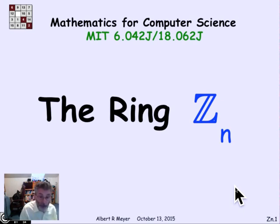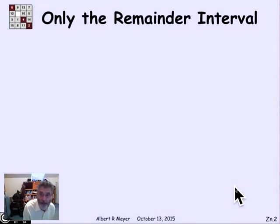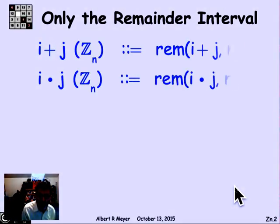But in the meantime, it's regularly the case that the numbers are overflowing and you're dealing with all the integers, but you're working with them modulo n. It turns out to be slick if we just force ourselves to only work with the numbers in the remainder interval. So that's the idea behind the ring Z sub n. We're only working with numbers in the remainder interval.